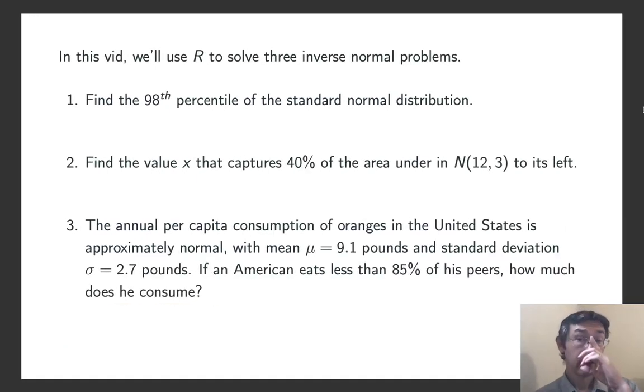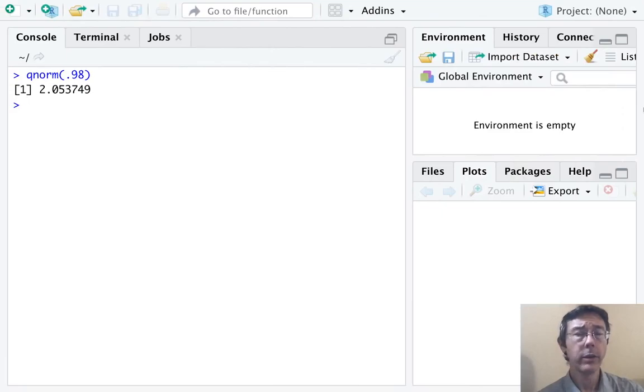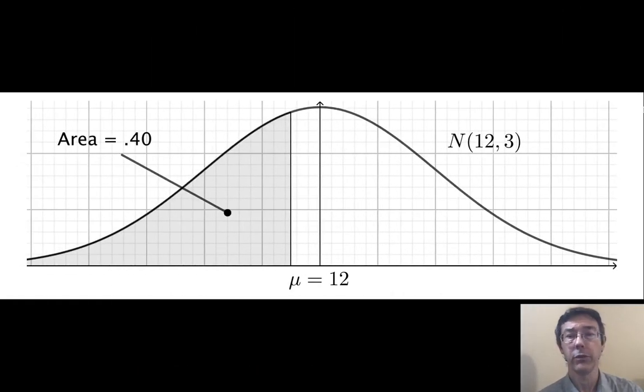So, problem two: find the value of x that captures 40% of the area under the normal distribution with mean 12 and variance 3 to its left. Okay, so here I think it's good to see a picture first.